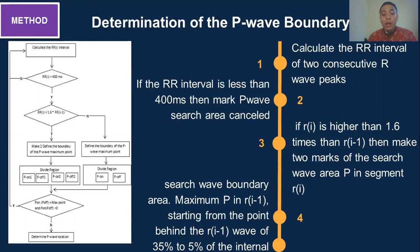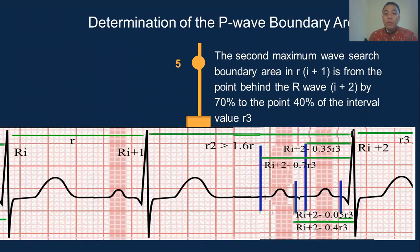The maximum P in RI minus one starts from the point behind the RI minus one wave at 35 to 5 percent of the interval. The second maximum wave search boundary area in RI plus one is from the point behind the R-wave at RI plus 2 by 70 percent, to the point 40 percent of the interval value R3.